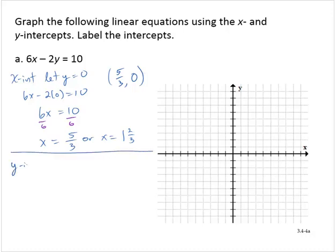Find the y-intercept. We let x equal 0. So then I'd have 6 times 0 minus 2y equals 10. 6 times 0 is 0. 0 subtract 2y is negative 2y equals 10.